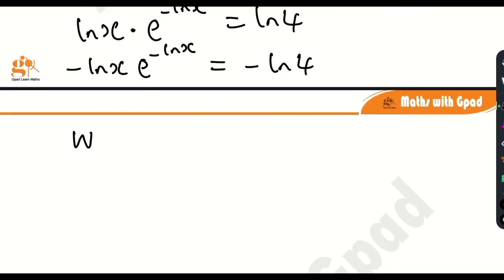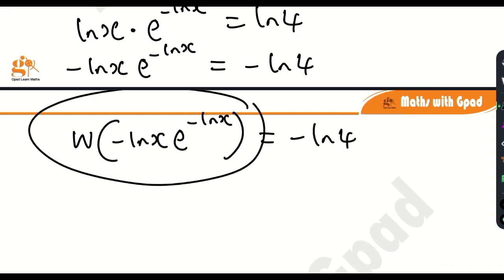So it's going to be W, that's the Lambert W function. Minus ln x times e minus ln x is equal to minus ln 4. So if you apply the Lambert W function from what I showed you earlier, you are just going to have negative ln x.